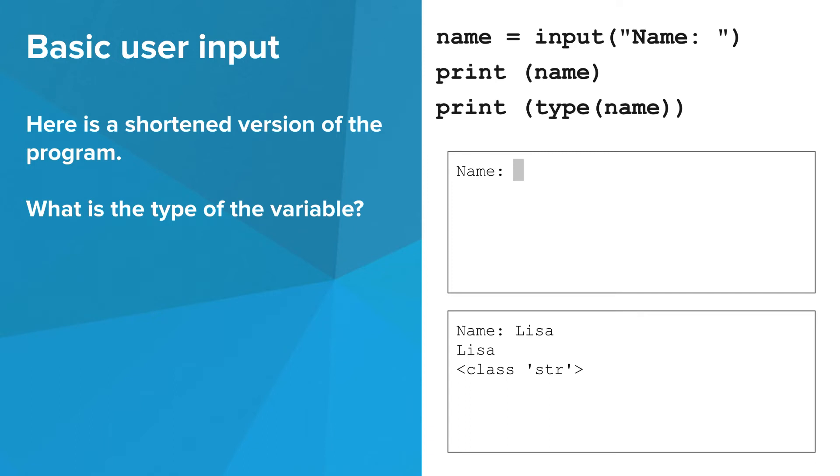Notice that the type of the variable where the input is stored is str or string. This makes sense because the user entered a bunch of text. But what if the user enters a number? It turns out the type of the variable is still str.